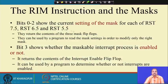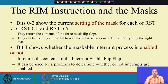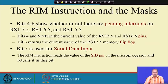Bits 0 to 2 show the current mask settings for RST 5.5, 6.5, and 7.5 — they give the content of the mask flip-flops and can be used by a program to read the mask setting. Bit 3 shows whether the maskable interrupt process is enabled, returning the content of the interrupt enable flip-flop. Bits 4 to 6 show pending interrupts for RST 5.5, 6.5, and RST 7.5 memory flip-flop respectively.